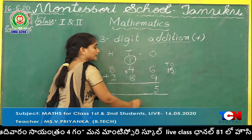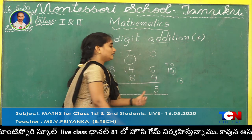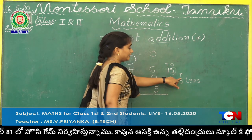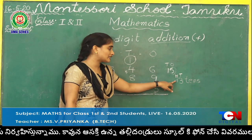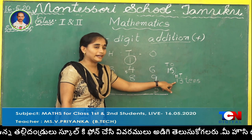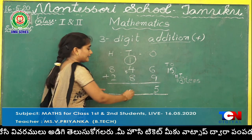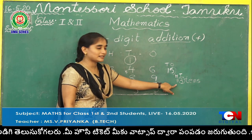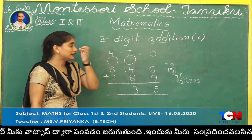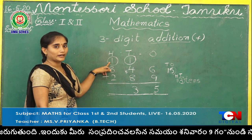We have added in tens place, so it is 13 tens. The tens place digit 3 should be written here, and the hundreds digit 1 is there, so this 1 will be carry-forwarded to the hundreds place. The carry to hundreds place is 1.